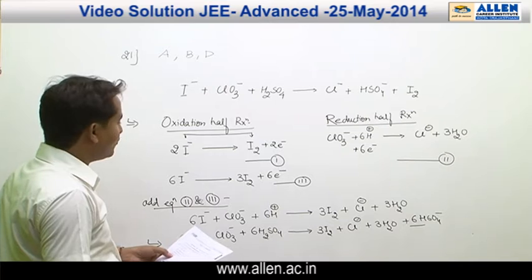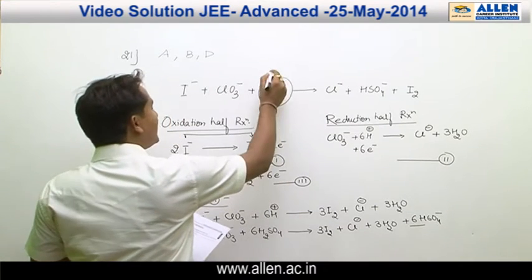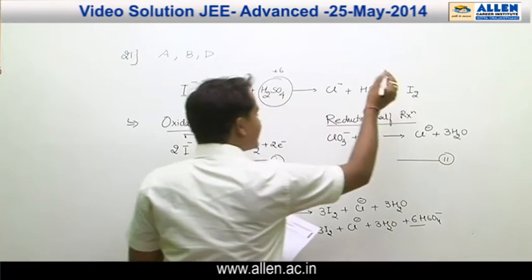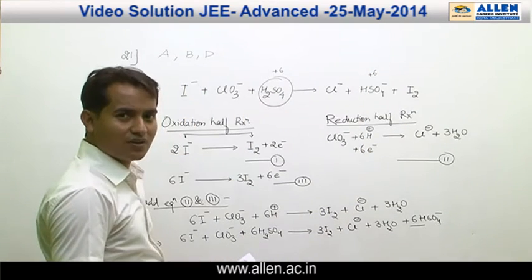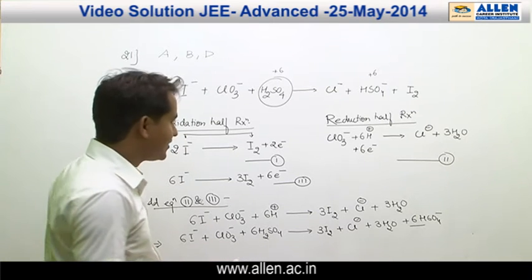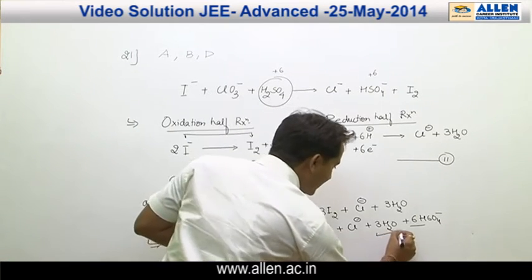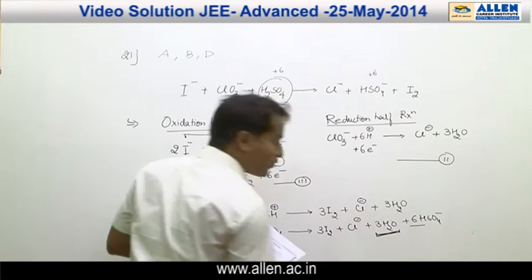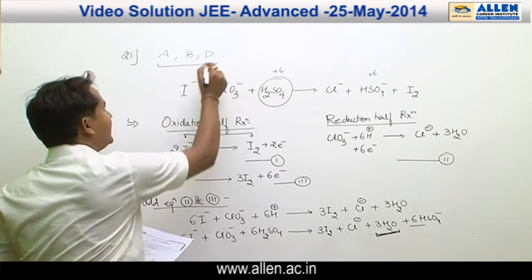Sulphur is reduced? Here oxidation number of sulphur is not changed. Here it is plus 6, it is plus 6, therefore no oxidation or reduction occurs. H₂O is one of the products. Here in the final balanced equation, we obtain H₂O as a product, therefore the answer would be ABD.